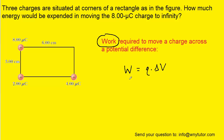The work required to move a charge across a potential difference is equal to the product of the charge and that potential difference. Now we will note that we are moving this charge to infinity. It is assumed at infinity that the potential value is equal to 0 volts, and indeed we can call that the final potential because that is the final location of this charge as we move it.